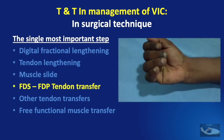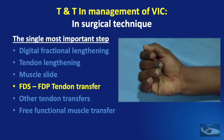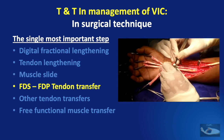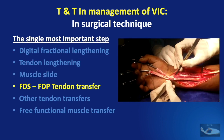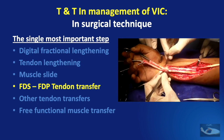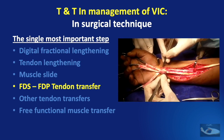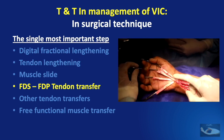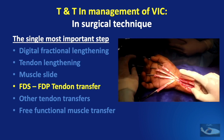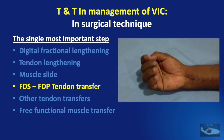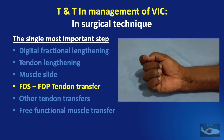As far as the FDS to FDP transfer is concerned, the important points to remember are that the FDS — which is the donor — should be divided distally, the FDP — which is the recipient — should be divided proximally, and tension adjustment to achieve the flexion cascade must be perfect.